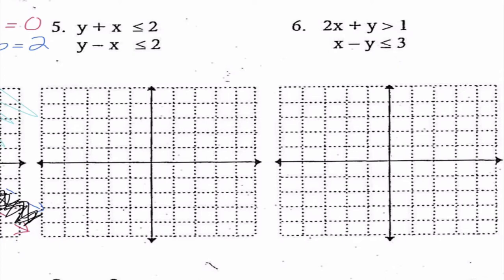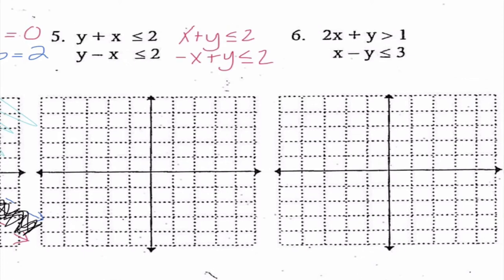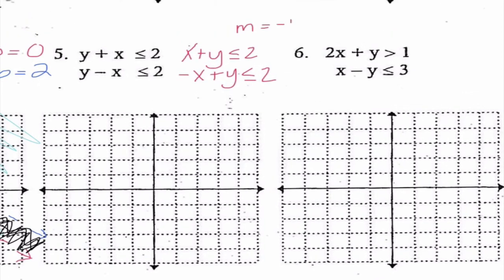Number 5: I'm going to rewrite these in standard form so x is first. For the first equation, my slope is negative 1 and my y-intercept is 2. I'm going to begin at 2 and go down 1 to the right 1, and this line should be solid. When I substitute (0, 0), I get 0 is less than 2 — a true statement. Instead of fully shading, I'm going to draw just a dashed indicator line on that side to show which side I'd shade.